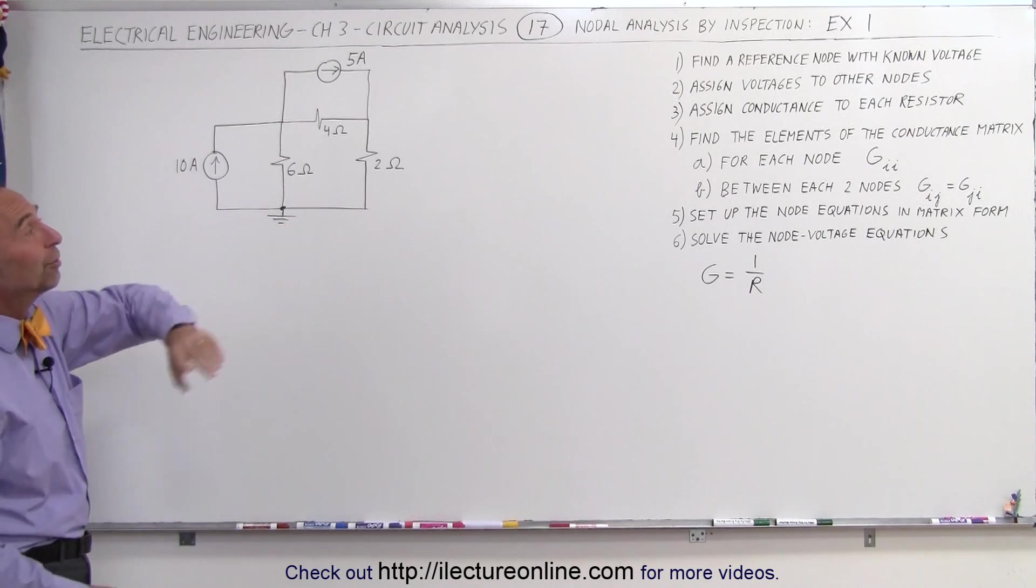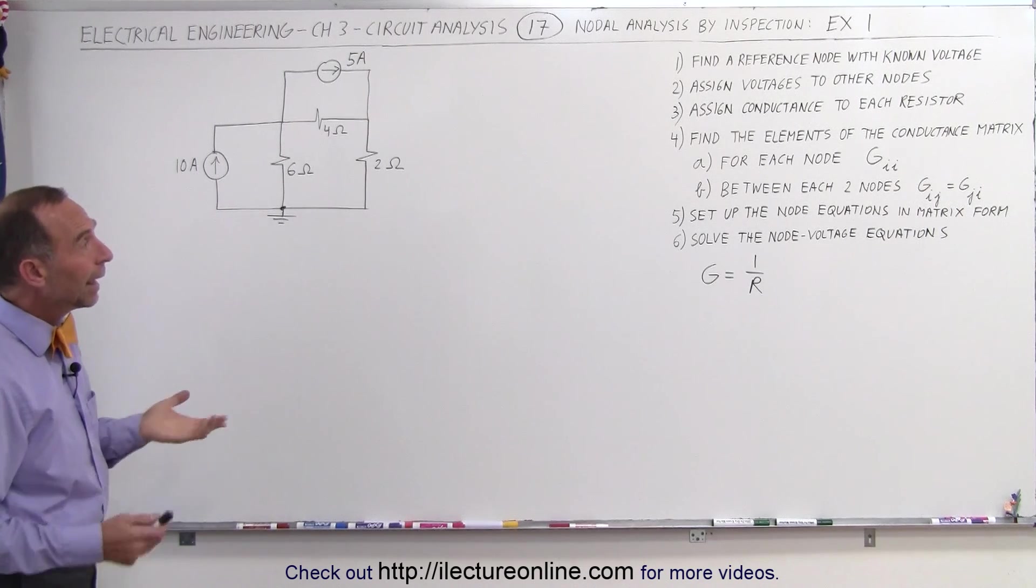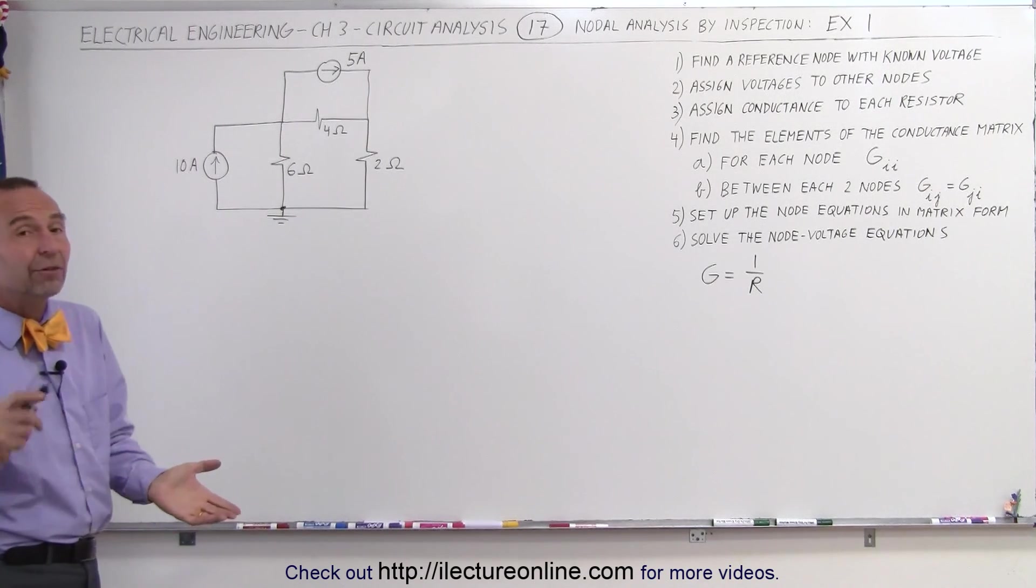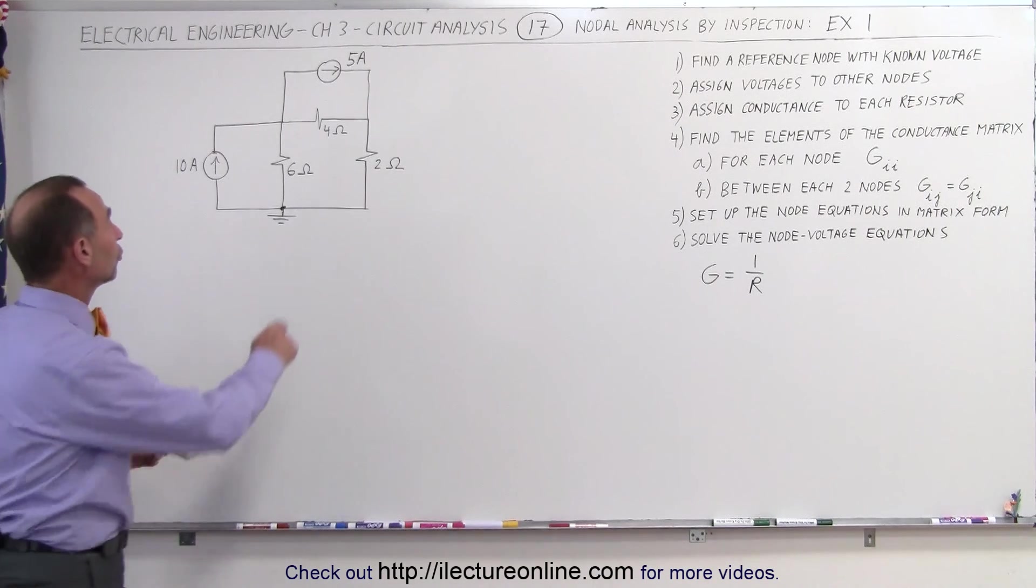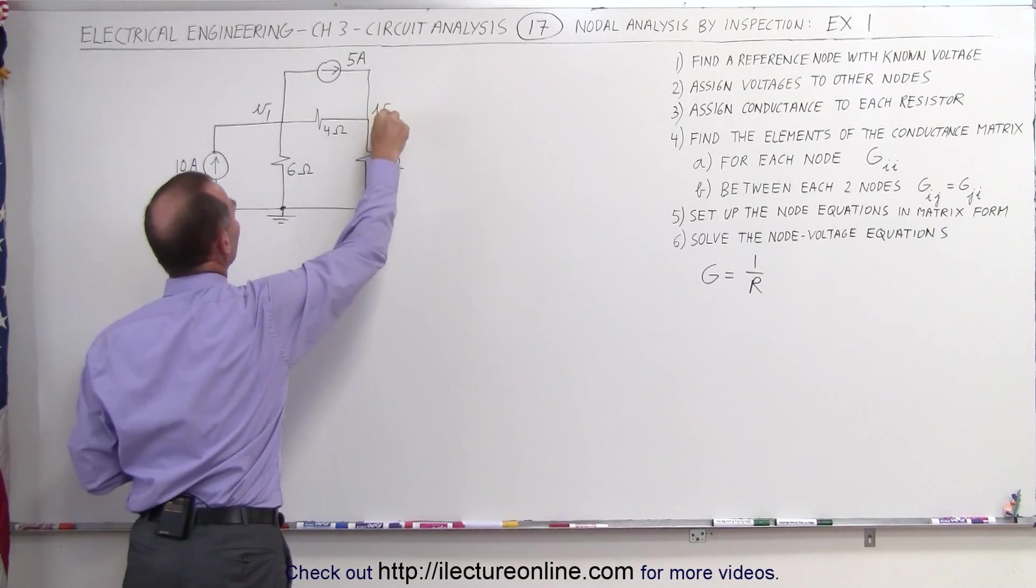Again, the first thing we want to do is find the reference node which we already have here. We'll call that the zero voltage node right there. And then the next thing we want to do is assign the voltages to the other nodes. There's two nodes right here. We'll call it V1 and V2.